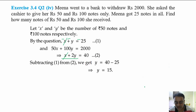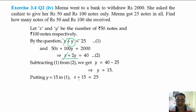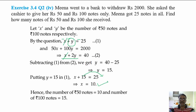Now substitute y is equal to 15 into the first equation. We get x plus 15 is equal to 25. So what is the value of x? 10. Right. Hence the number of Rs. 50 notes is 10 and the number of Rs. 100 notes is 15.